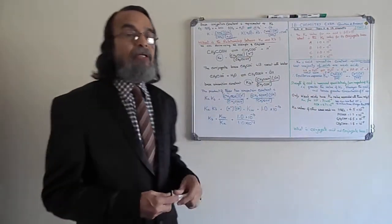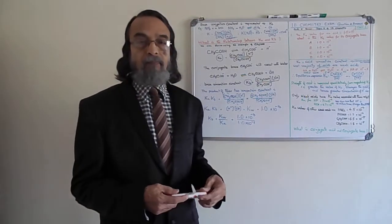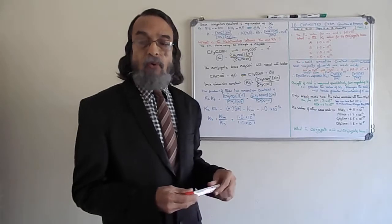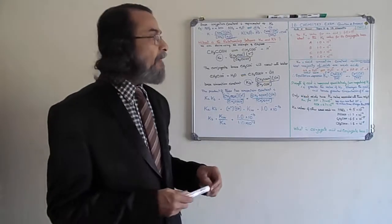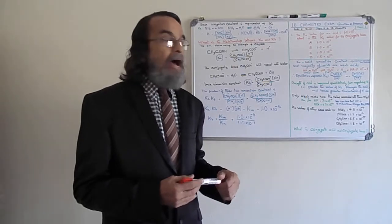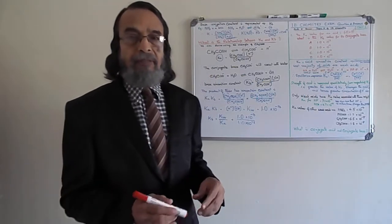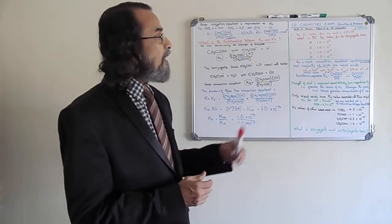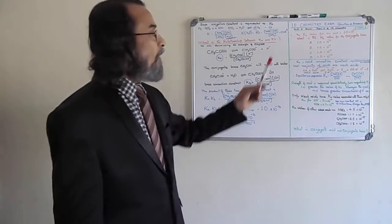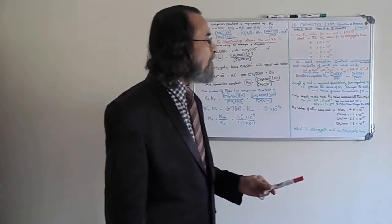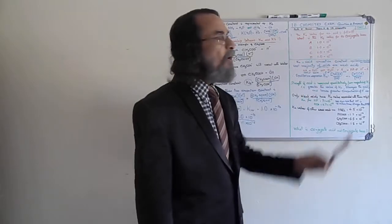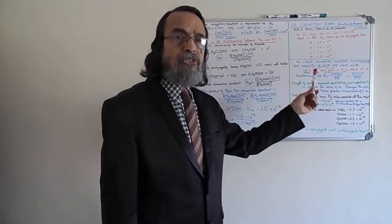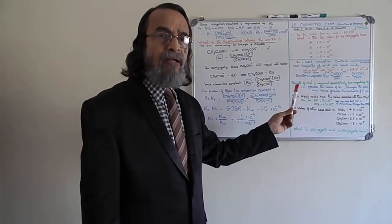Welcome to the IB Chemistry class. IB stands for International Baccalaureate, consisting of two types: Standard Level and Higher Level. In IB Chemistry there are 11 chemistry topics. Today is the first class on acids and bases, which is Topic 8. We are discussing multiple choice questions and the method of arriving at answers in a short time, in a logical and easier way.